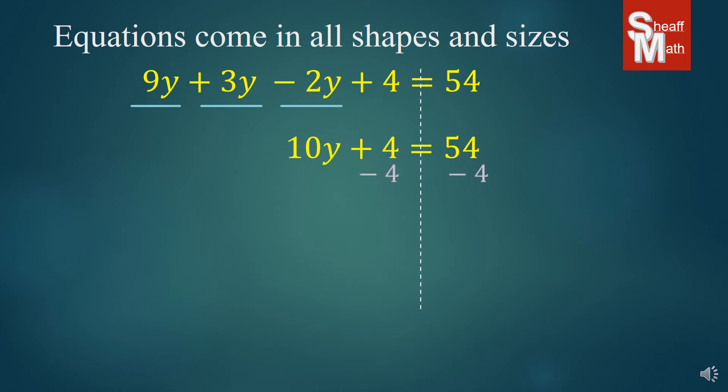Now we have our two-step equation. We're going to subtract 4 on both sides, giving us 10y equals 50. Divide by 10 on both sides, and y equals 5.